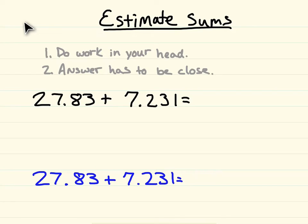Let's first take 27.83 and round it to the ones place. Underline the 7, look at the 8. Since the 8 is 5 or more, the 7 is going to soar up to an 8.